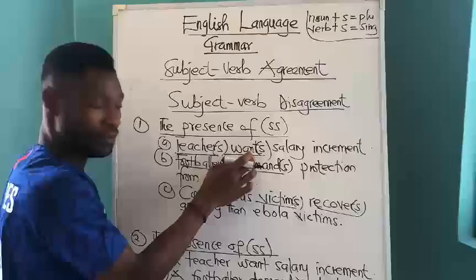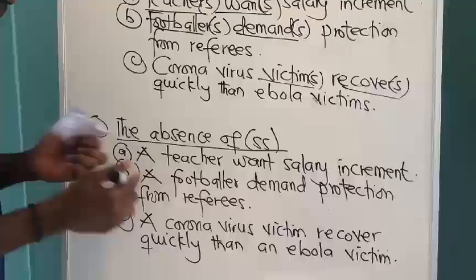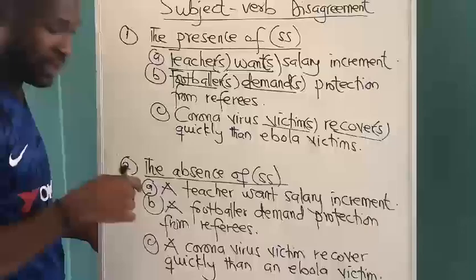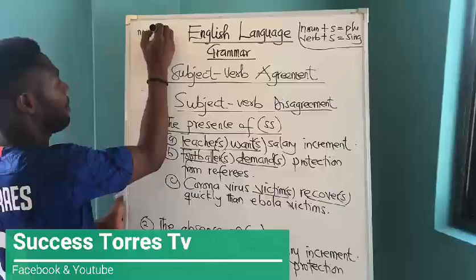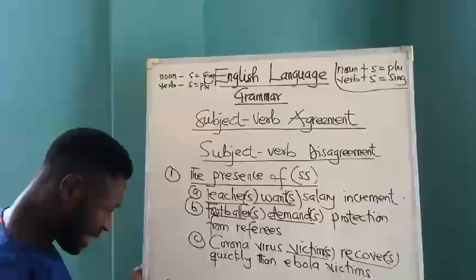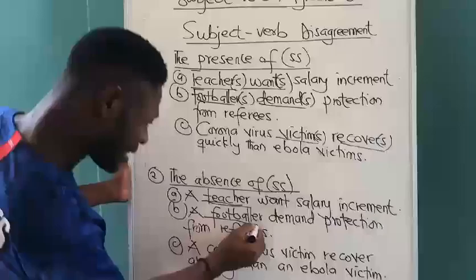So when you add S to the verb 'want,' it becomes singular. Therefore, we have plural subject with singular verb — that is disagreement. Plural subject, singular verb: disagreement. Plural subject 'victims,' then singular verb — it's a disagreement. When you come to the absence of the double S, that also renders the statement grammatically wrong. If both S's are absent, there is also a problem with concord. Here we have 'a teacher' — noun minus S is singular — and a verb minus S is plural. So singular subject with plural verb — that is also wrong.